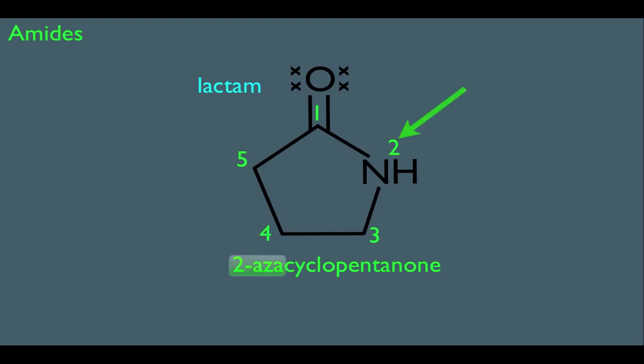In organic chemistry, aza is another term for nitrogen. So, we can interpret that as position 2 has a nitrogen. So, again, the name of this molecule is simply 2-azacyclopentanone.